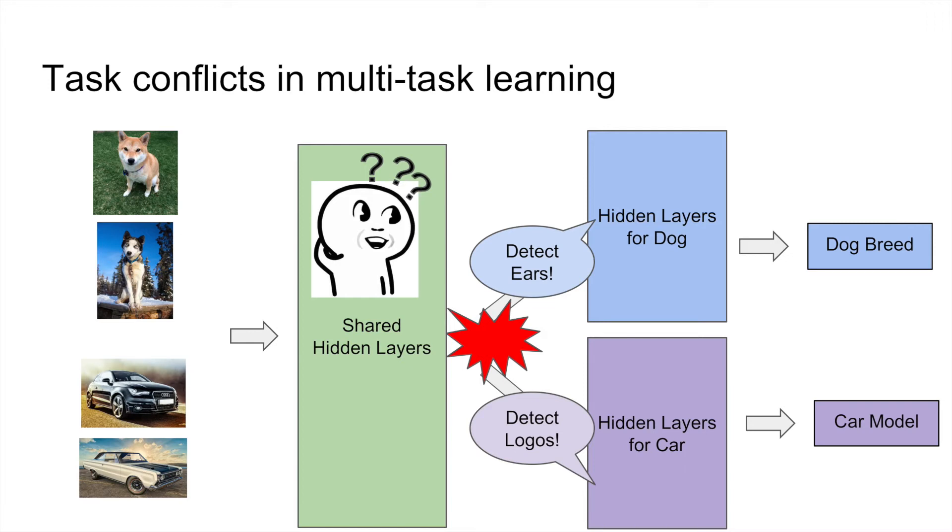The examples above are just for illustration. In practice, the task relationships are much more complicated. In this example, although the two tasks don't share high-level features, they could share very low-level features, such as edges.